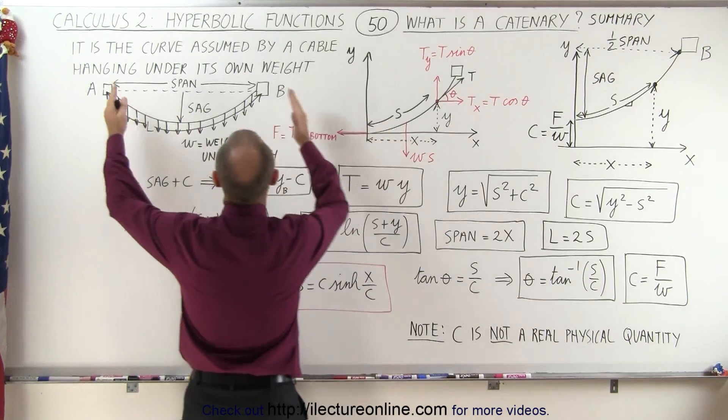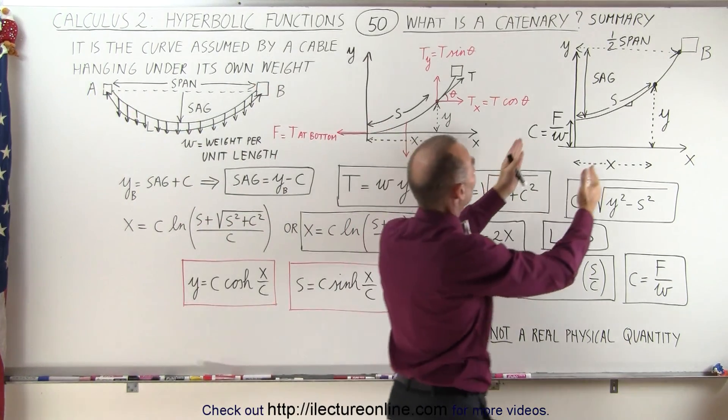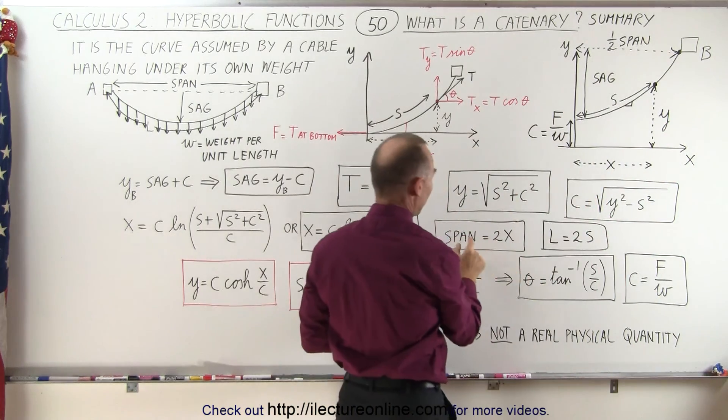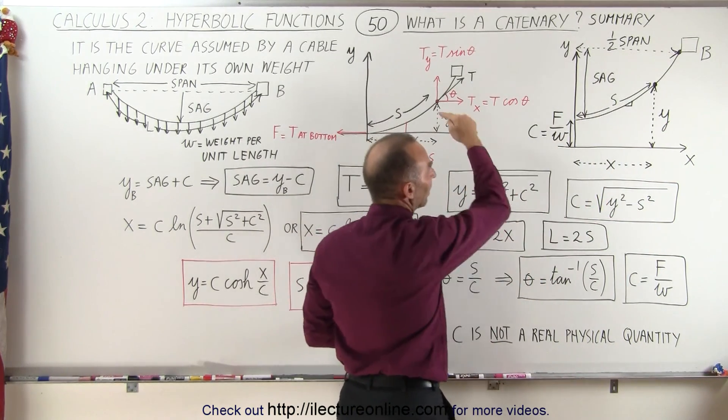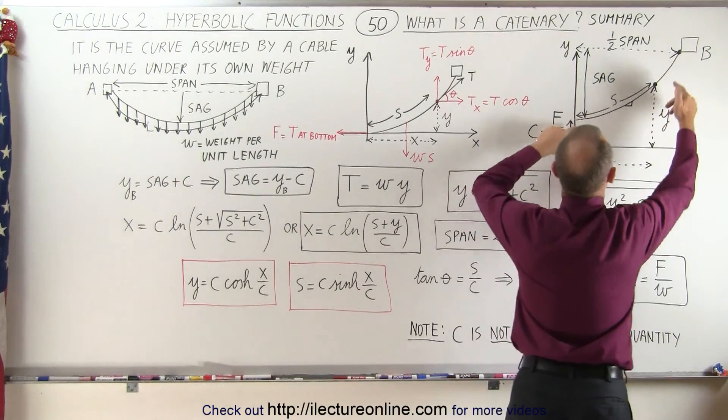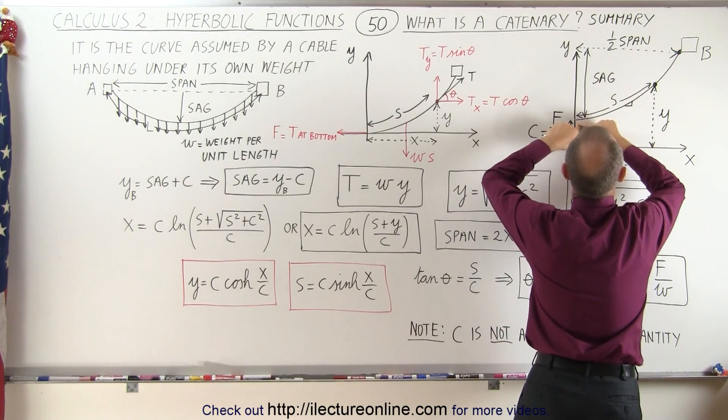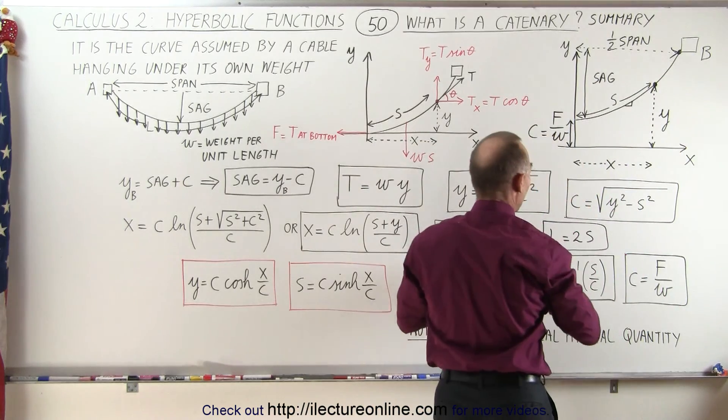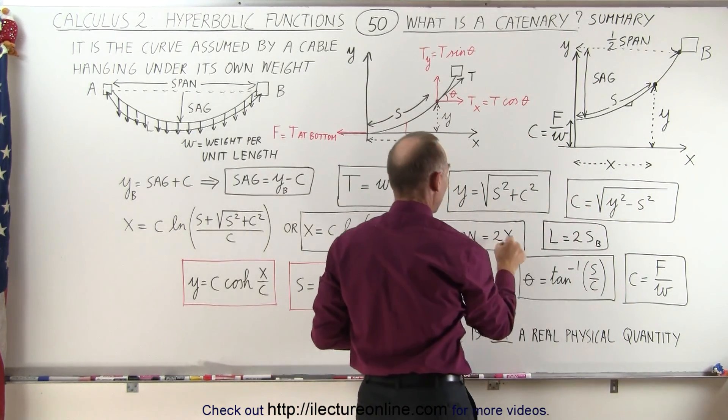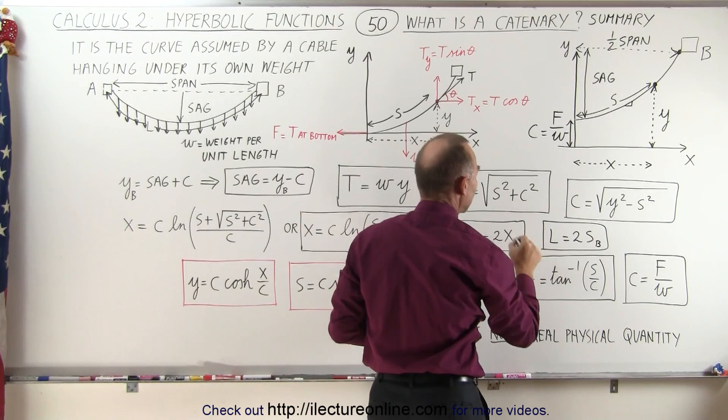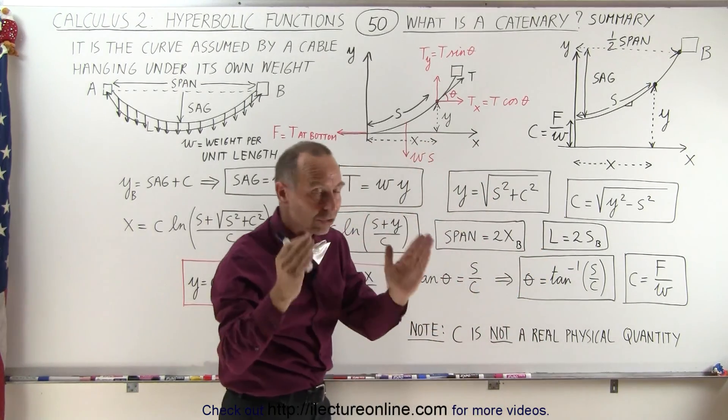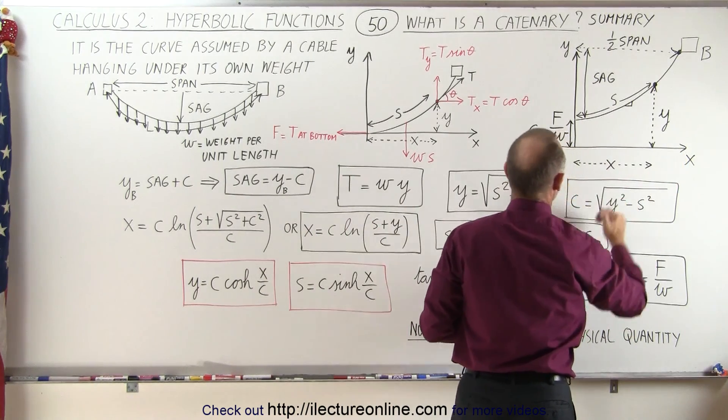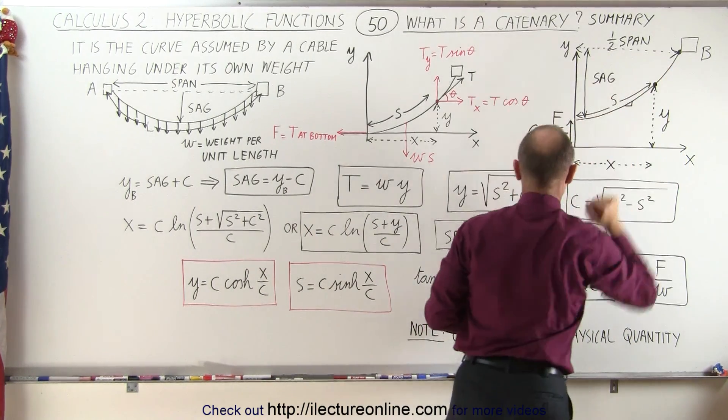Realizing that the span of the entire cable is simply twice the distance from here to the support, if we call that x, then we know that the span is twice x, and the length of the cable will be twice the distance s, of course again when we take the entire distance from there to there, so maybe we should write s sub b, and here the span twice x sub b, again indicating we're talking about the entire distance from here to the point of support, and from here to the point of support.